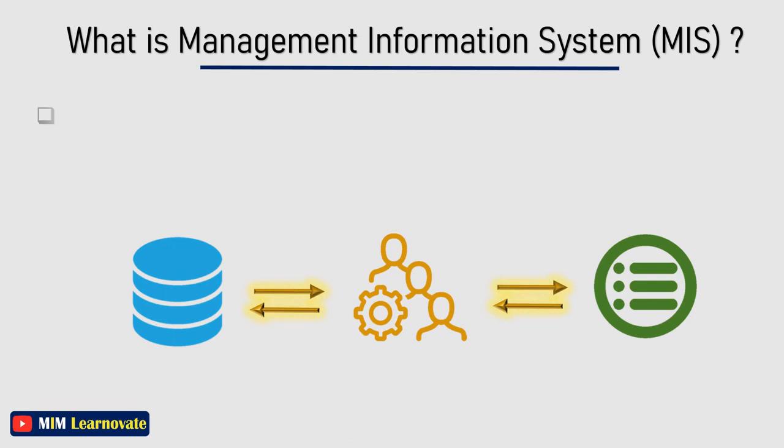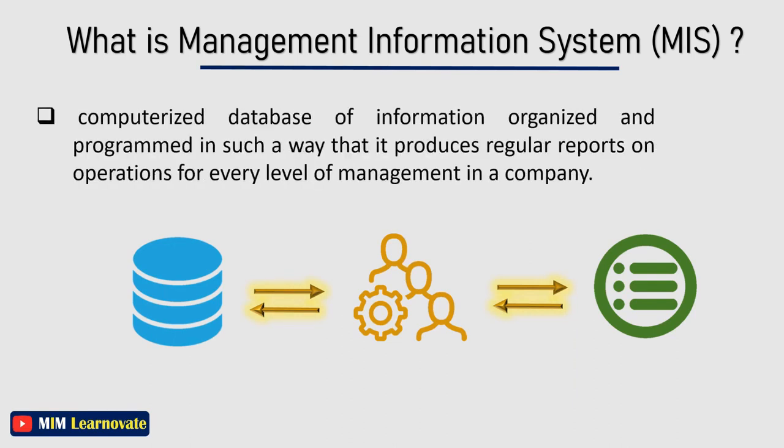A management information system is a computerized database of information organized and programmed in such a way that it produces regular reports on operations for every level of management in a company. Before studying further about MIS, let's learn the levels of management in an organization.